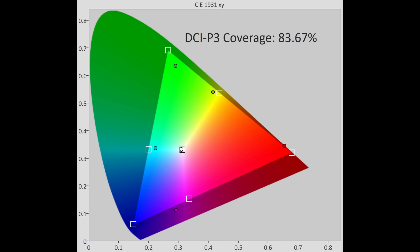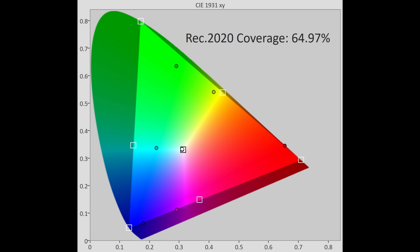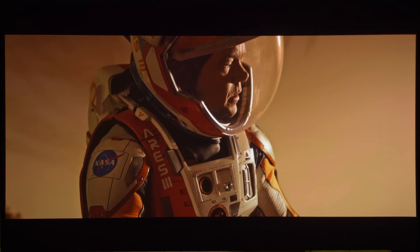When it came to wide color gamut capabilities, DCI-P3 coverage came in at 84% UV, whereas Rec 2020 was 65%. Gradation quality was good, adding no posterization to the sky of The Martian beyond what's already present in the movie.